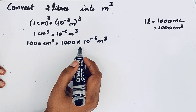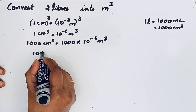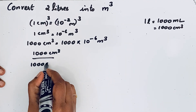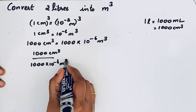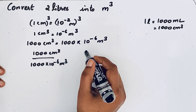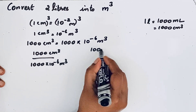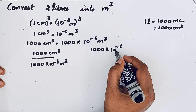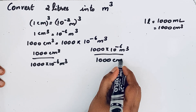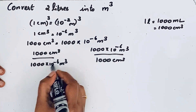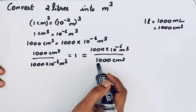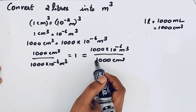This statement we can write as an equation. We set up the unit factor: 1000 centimeter cube = 1000 × 10⁻⁶ meter cube. We can flip this equation; either form can be used as a unit factor for conversion purposes.